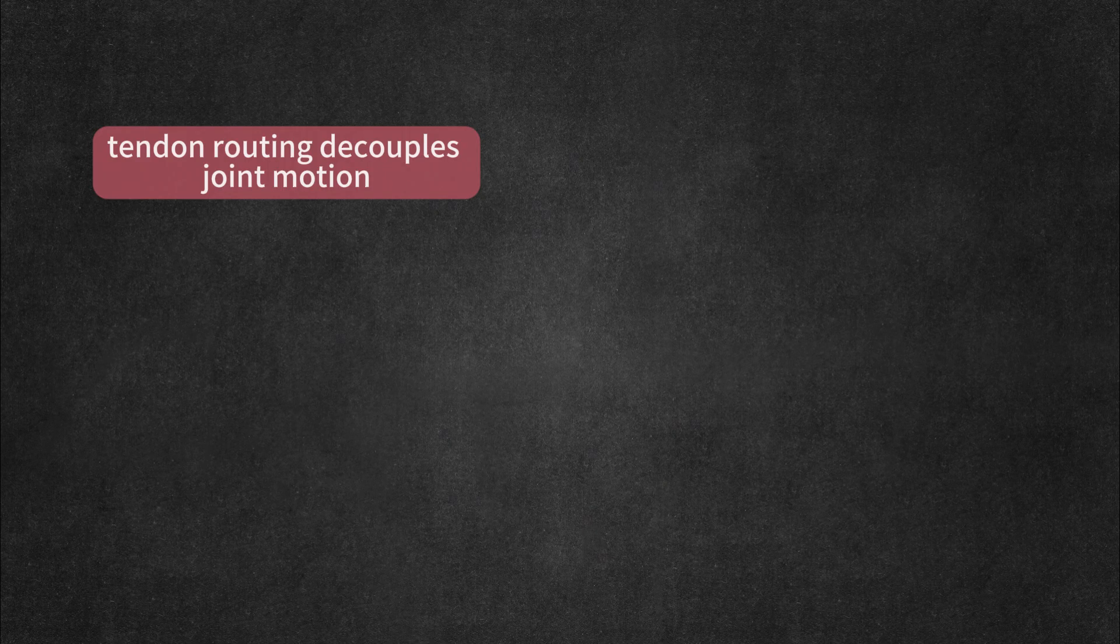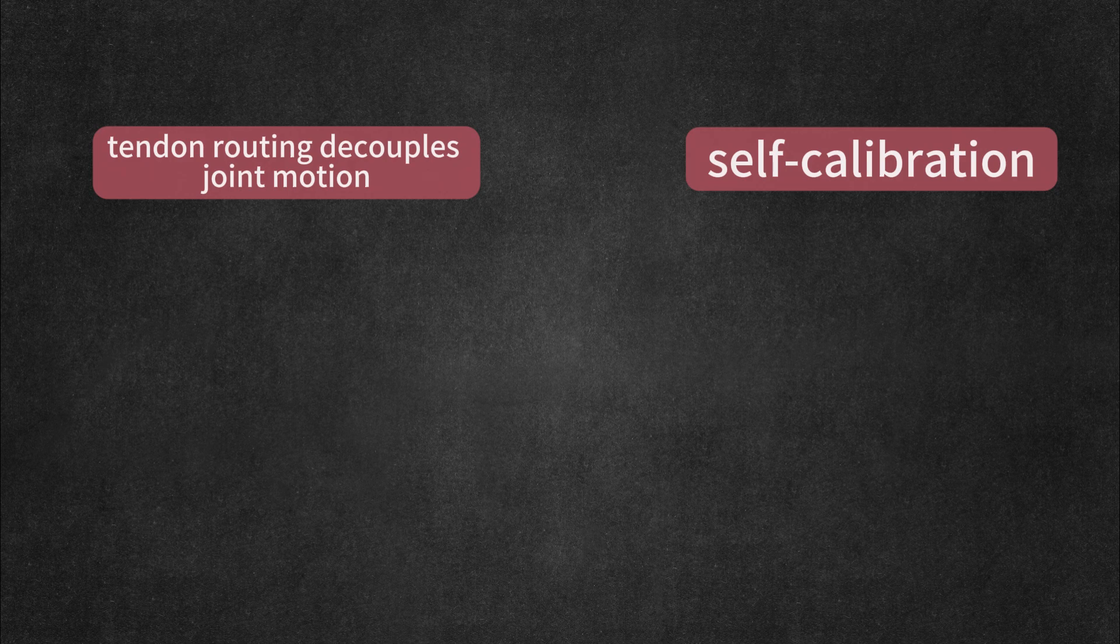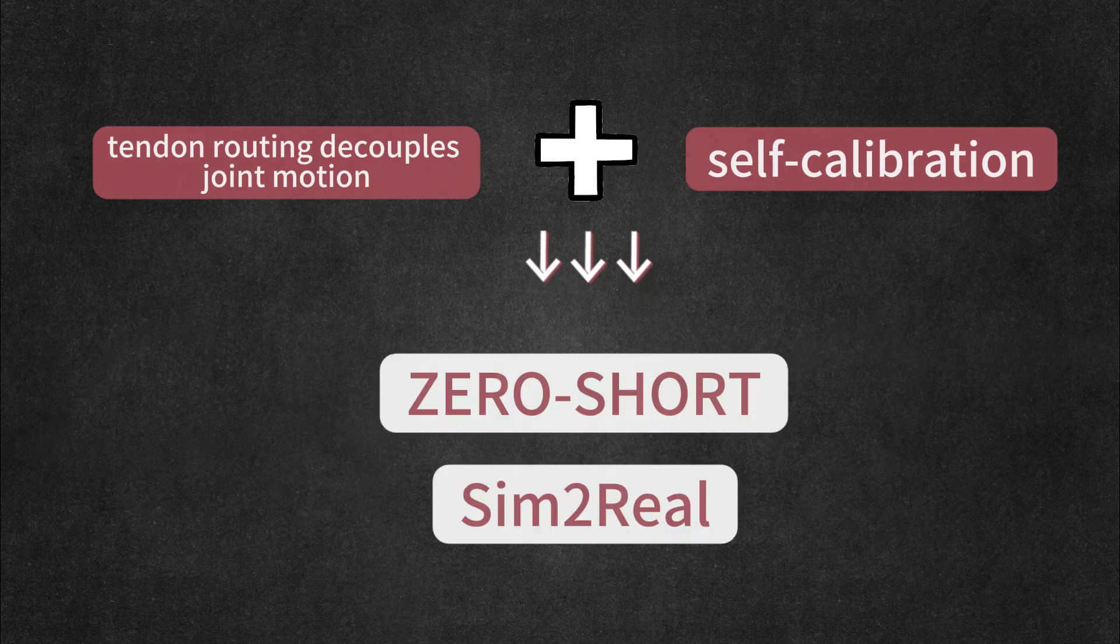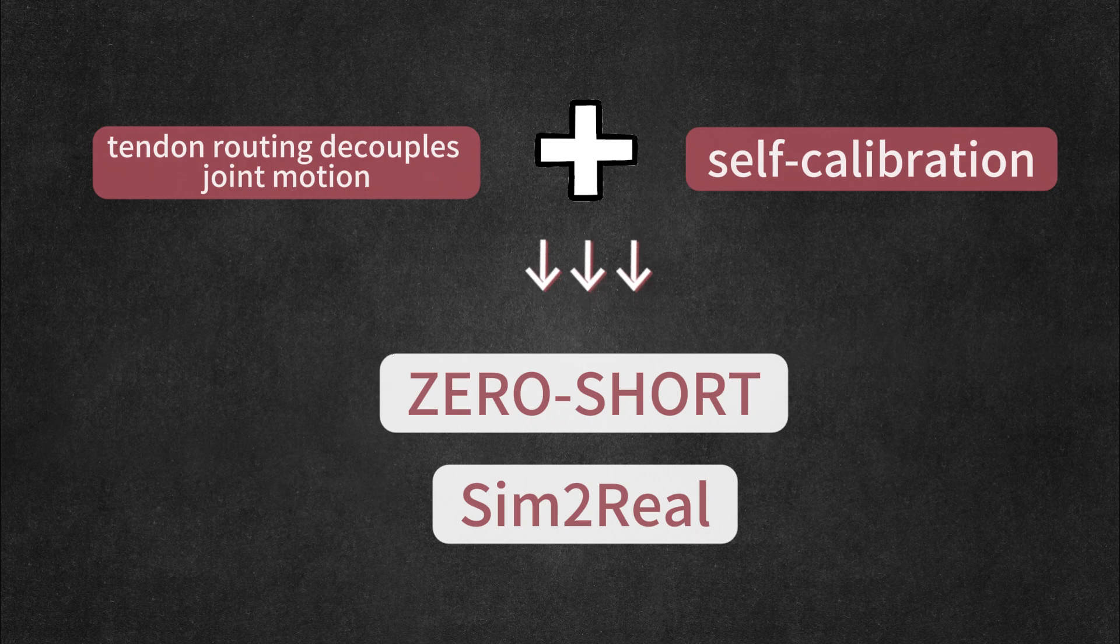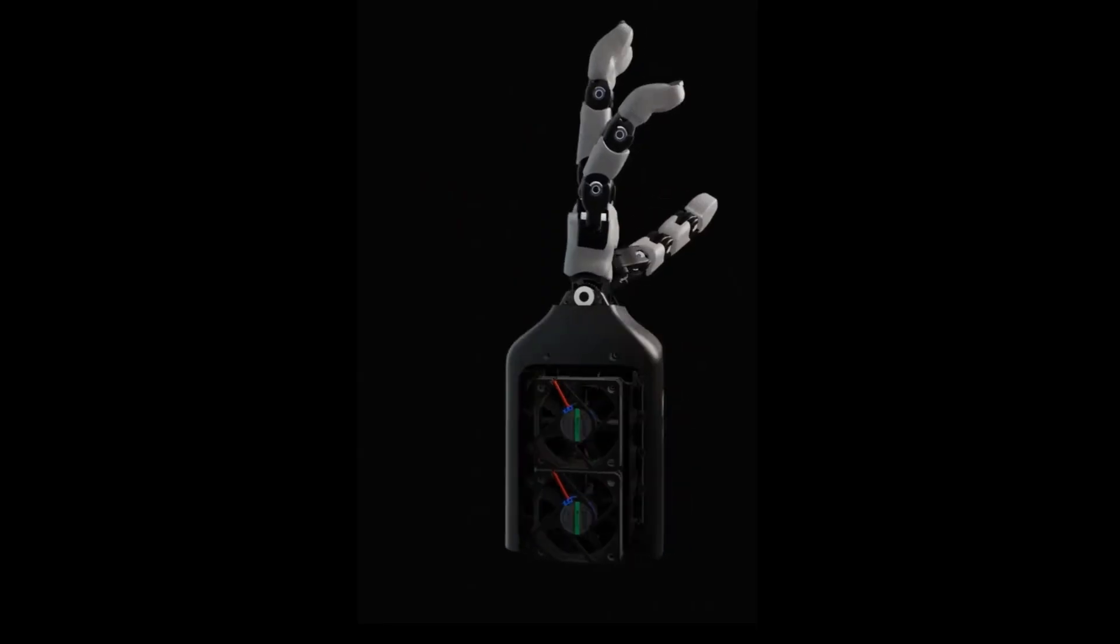To sum up, tendon routing decouples joint motion, reducing complexity, while self-calibration ensures precise motor-to-joint correspondence and minimizes error. Together, these enable true zero-shot sim-to-real transfer.